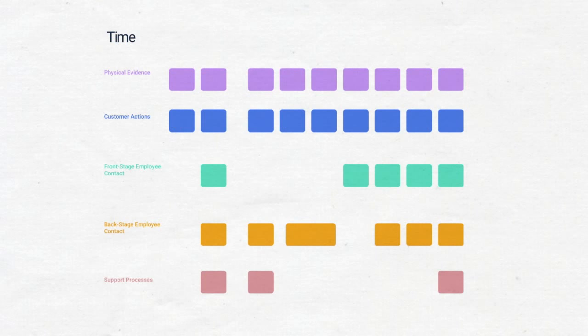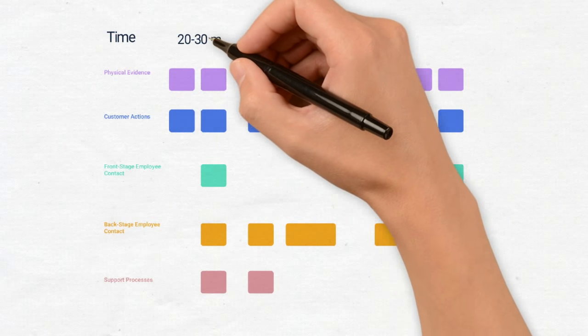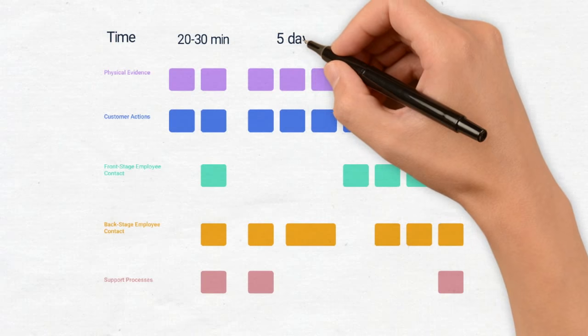Map the time for each step in the service blueprint. Time is an important part of the service. A step that takes 10 minutes versus 10 hours versus 10 weeks is a big difference.